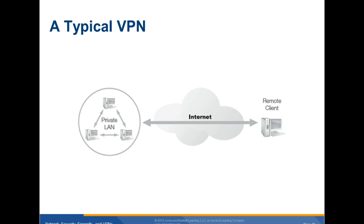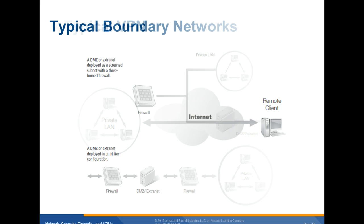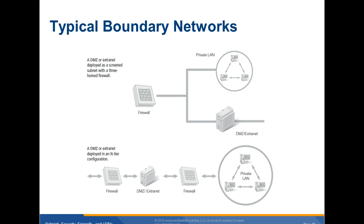A typical virtual private network shows the internet between the remote client and the private local area network. The tunnel created by the VPN on either end of the internet connection will ensure security. A typical boundary network has a DMZ or extranet deployed as a screened subnet with a three-homed firewall connecting the private LAN to the DMZ and the extranet, then yet another firewall deployed in an N-tier configuration.